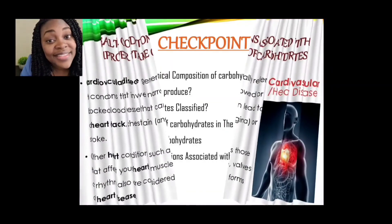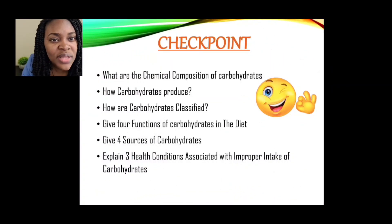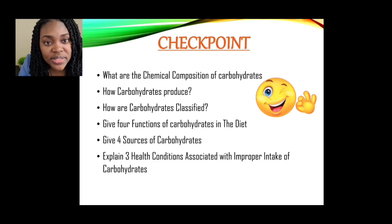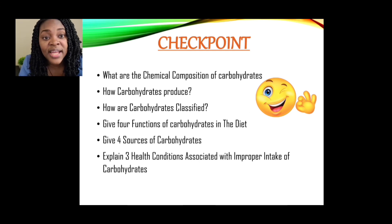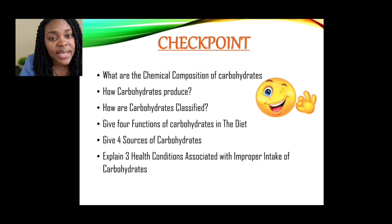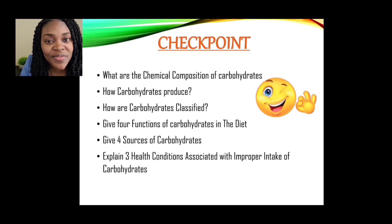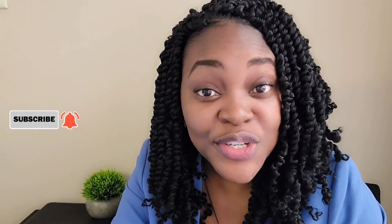Now it's time for our checkpoint. What is the chemical composition of carbohydrates? How are carbohydrates produced? How are carbohydrates classified? Give four functions of carbohydrates in the diet. Give four sources of carbohydrates. Explain three health conditions associated with improper intake of carbohydrates. Based on our lesson, you should be able to ace all of these checkpoints. Don't forget to like, subscribe, and share with persons who you know would find this video useful. Thank you for making it to Ferris Tutorials.